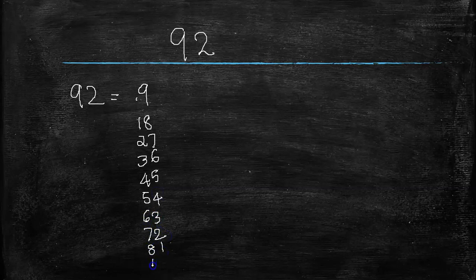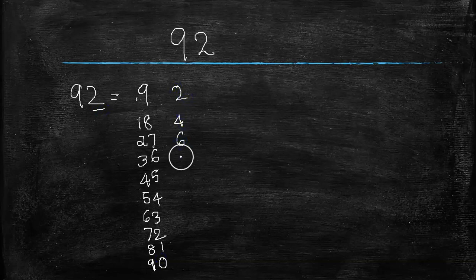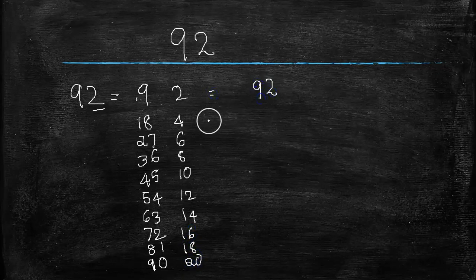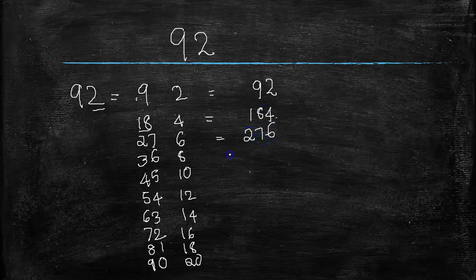Here you write 2 times table: 1 times 2 is 2, 2 times 2 is 4, 3 times 2 is 6, 4 times 2 is 8, 5 times 2 is 10, 6 times 2 is 12, 7 times 2 is 14, 8 times 2 is 16, 9 times 2 is 18, 10 times 2 is 20. Here it is 92.